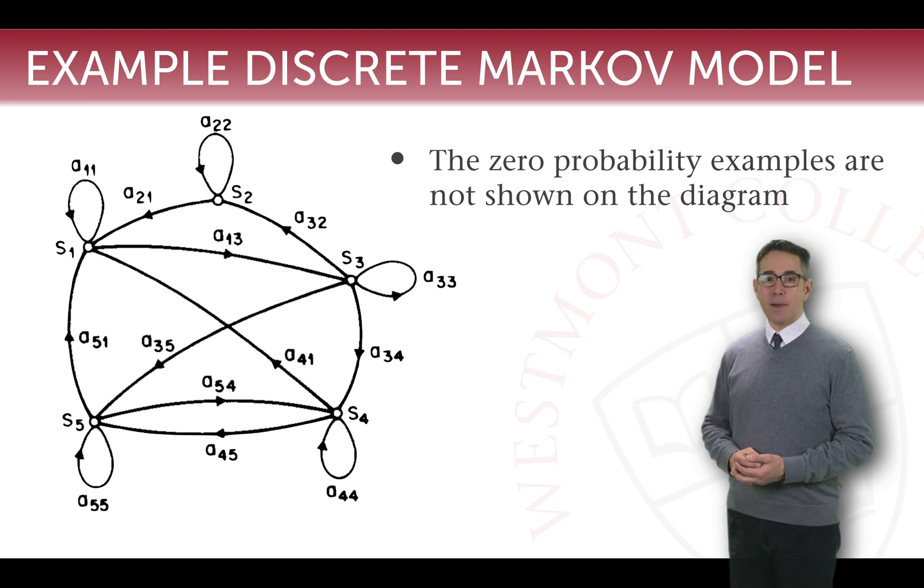The probability of moving from S2 to S3, S4 or S5 is 0 percent. Otherwise, there would be a line on this diagram.